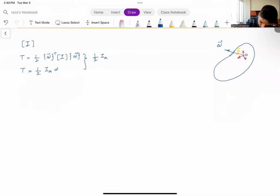One half i_a omega squared equals one half vector omega transpose matrix I vector omega. So I have this identity.